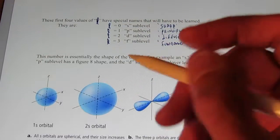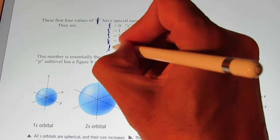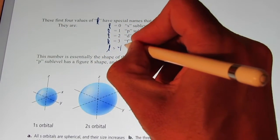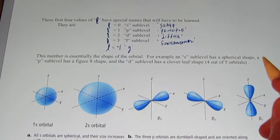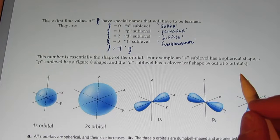As L gets bigger, we just go alphabetically. So if L got to four, we would call that the G sublevel. If L got to five, we'd call it the H sublevel, et cetera. Okay?